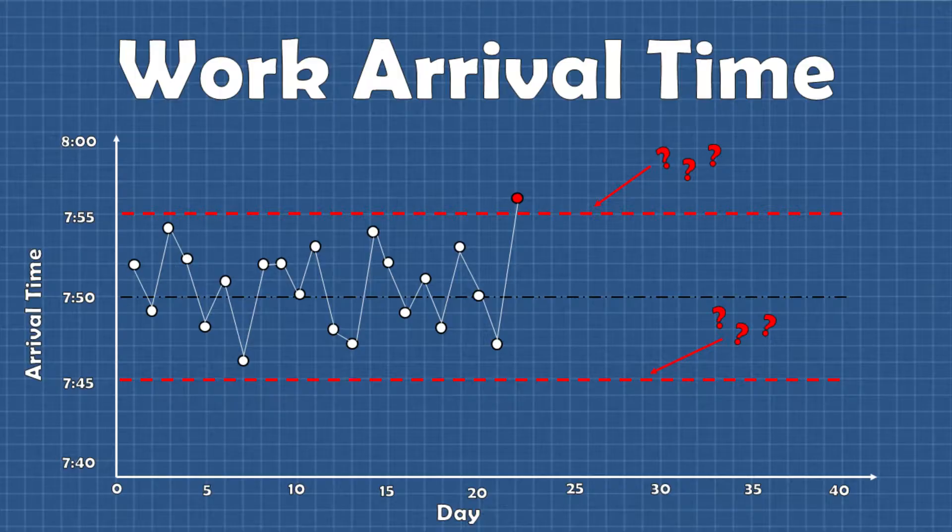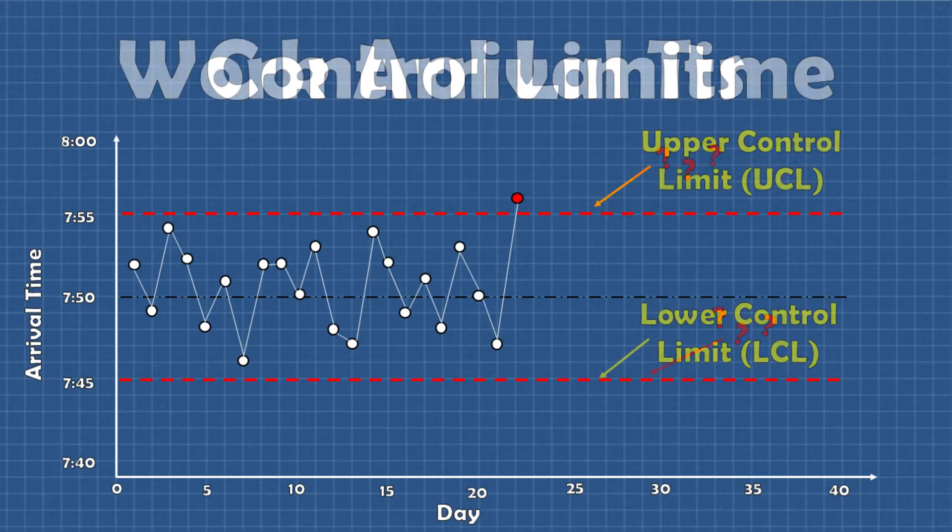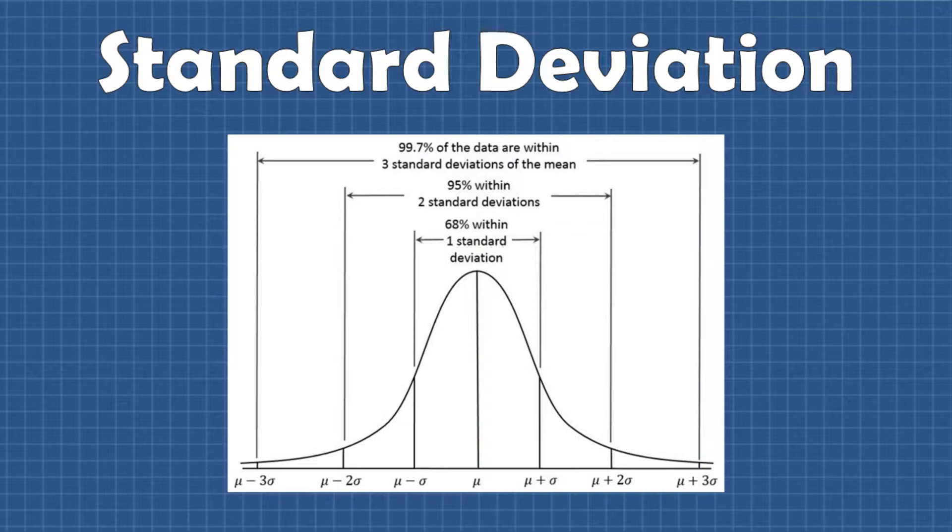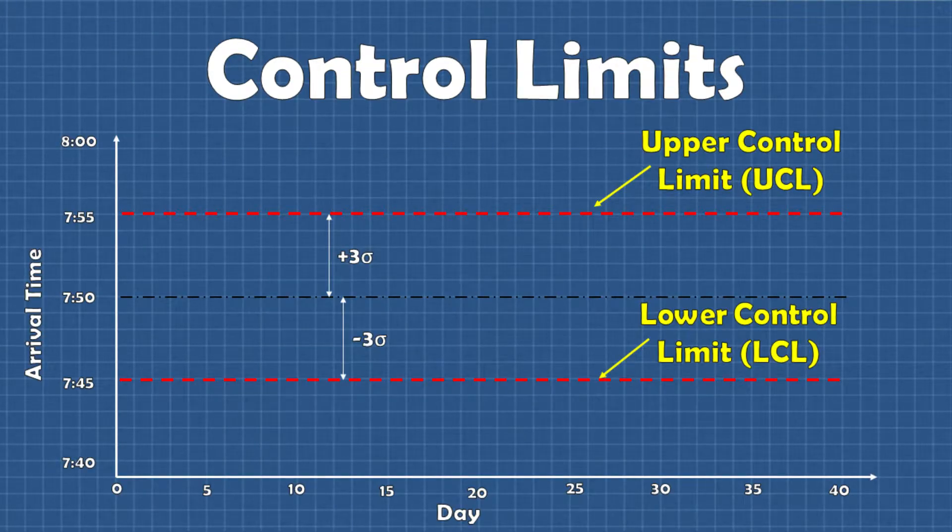So this is where things get into the statistics but don't worry I'll keep things somewhat light for now. Basically some people that are much smarter than me have come up with ways of determining where we should draw the lines between common and special cause variation in the process. Those lines are called the control limits. The upper and lower control limits are determined first by calculating an estimated short-term standard deviation or sigma value based on the data set used. The standard deviation is just a measure of how spread the data is. Then we add three standard deviations above the mean and subtract three standard deviations below the mean to set our control limits.